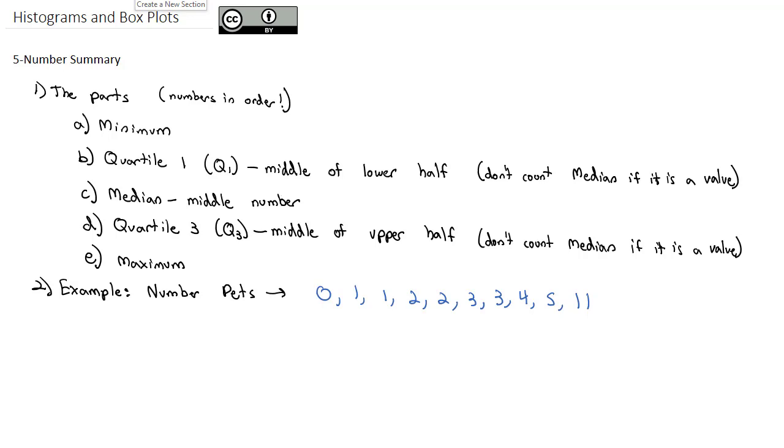I usually start with the middle value, the median. If I were to count 1, 2, 3, 4, 5, 6, 7, 8, 9, 10, there's 10 values.